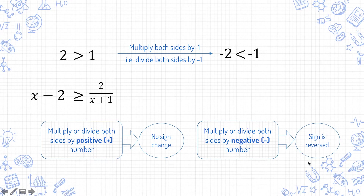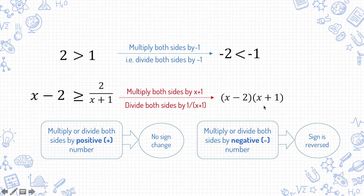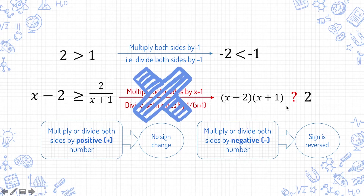Initially it was greater than, now it's smaller. The same logic applies any time you want to multiply or divide by a negative number. Then what if you want to multiply or divide both sides by an unknown which isn't strictly positive or negative? Suppose I want to multiply both sides by (x+1). For certain values of x, (x+1) will be positive, but for other values of x, (x+1) would be negative — so you can't do this. You can only multiply or divide an inequality by something if you know whether it is strictly positive or strictly negative.